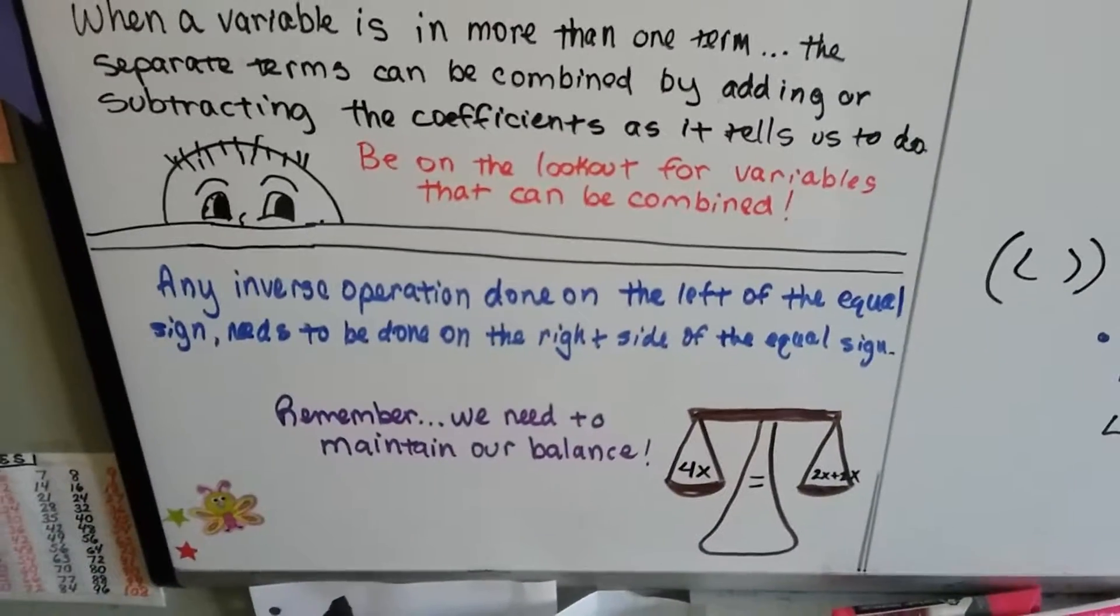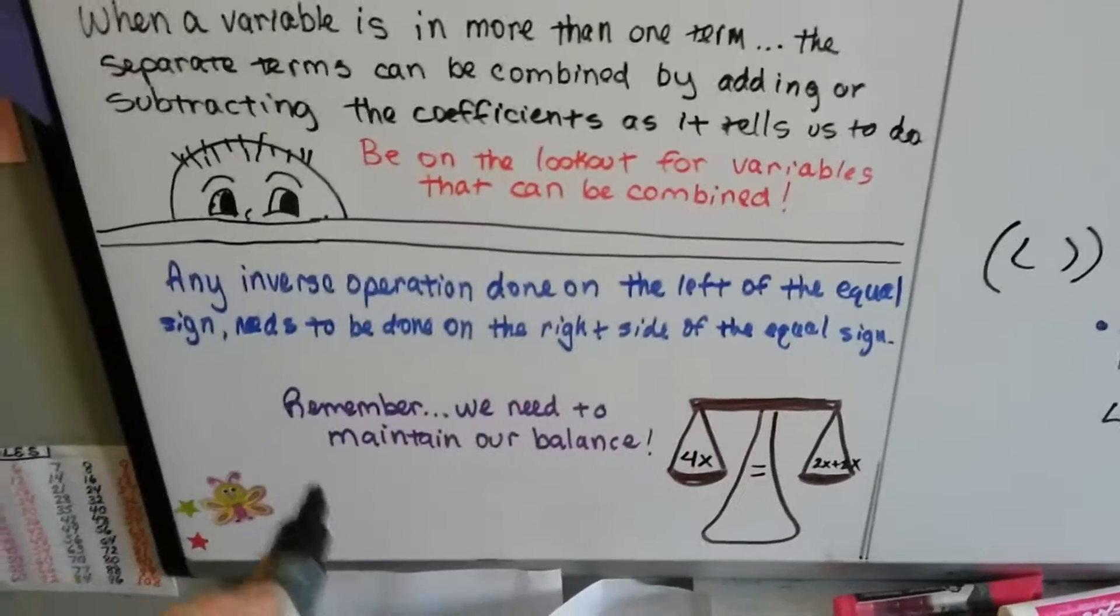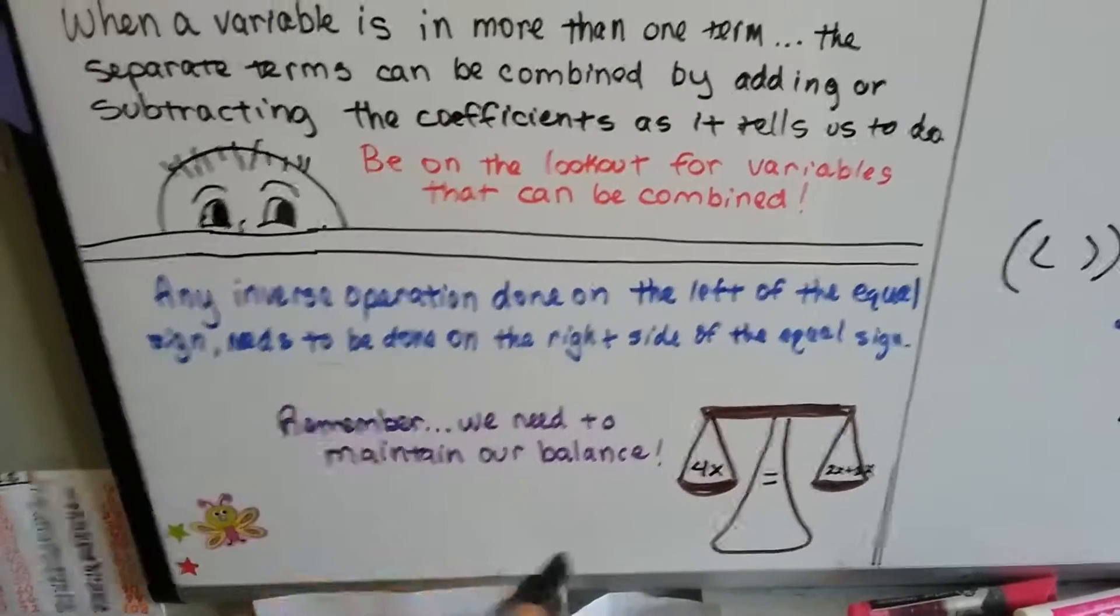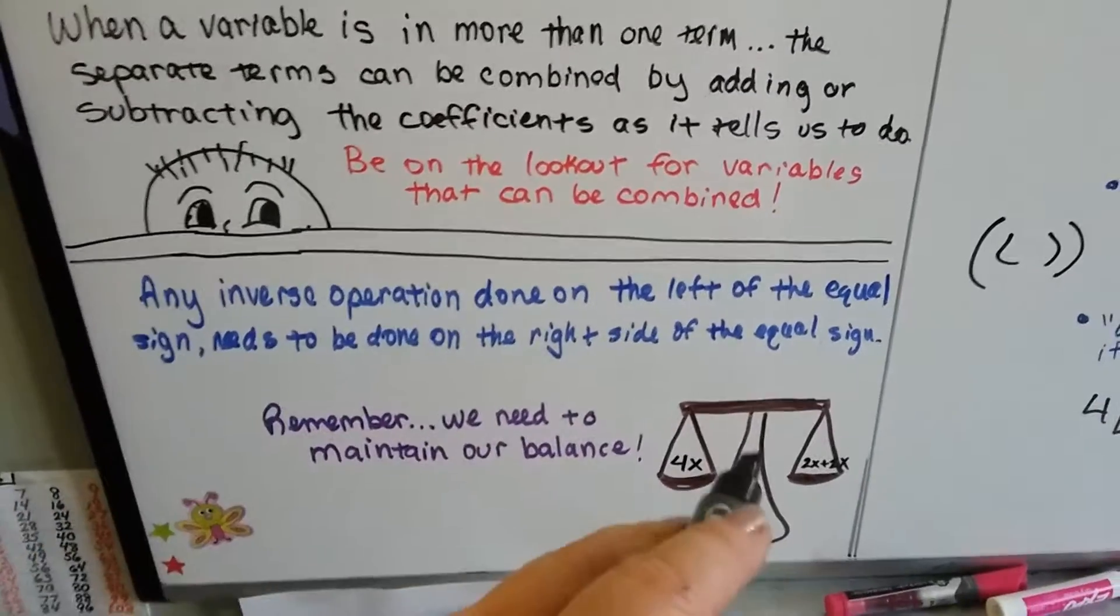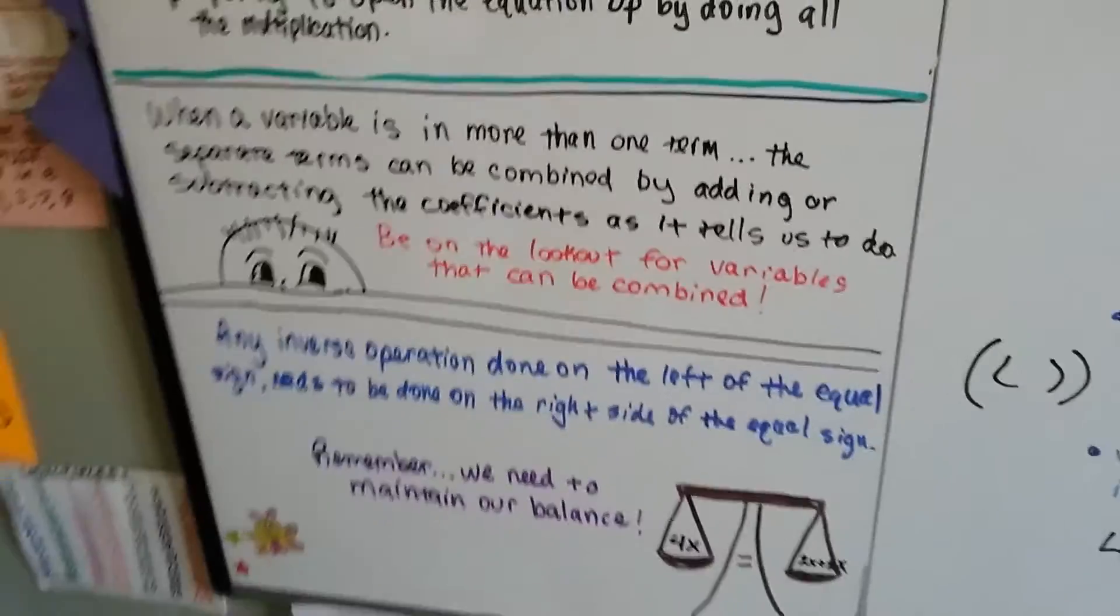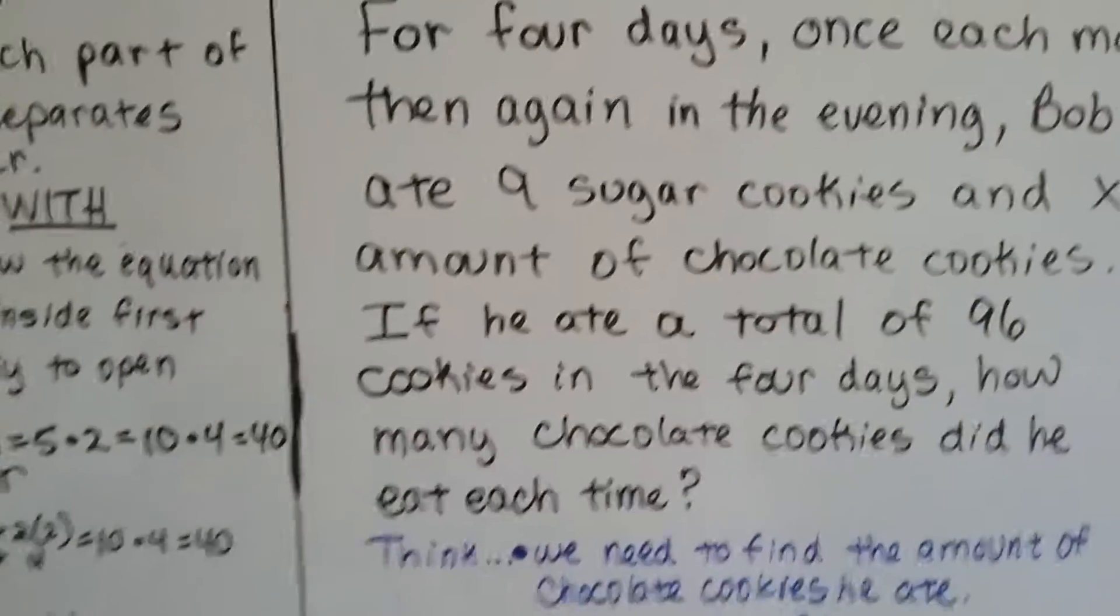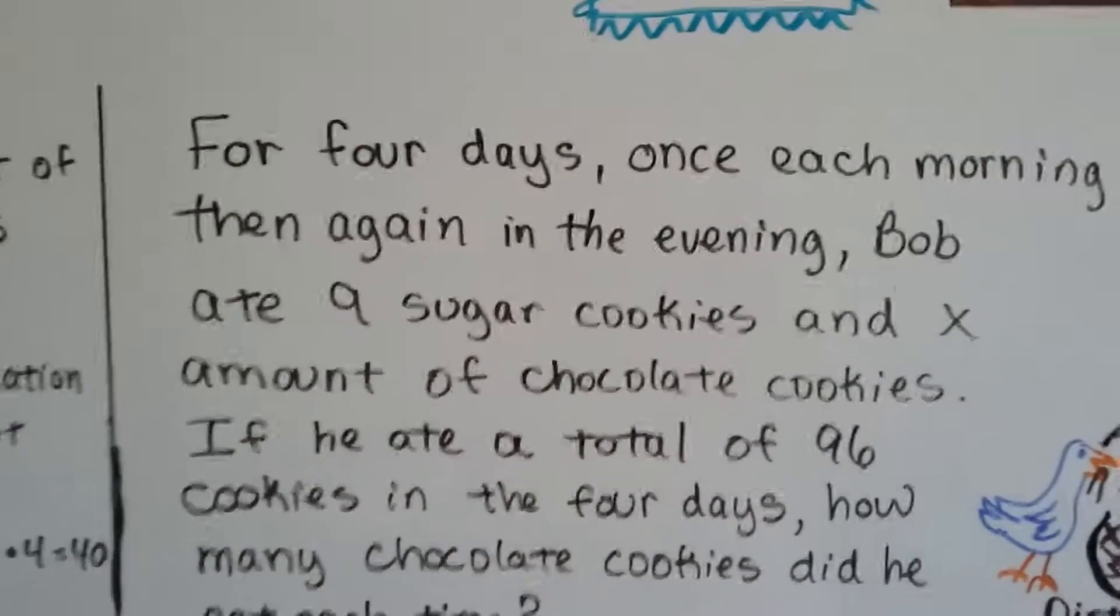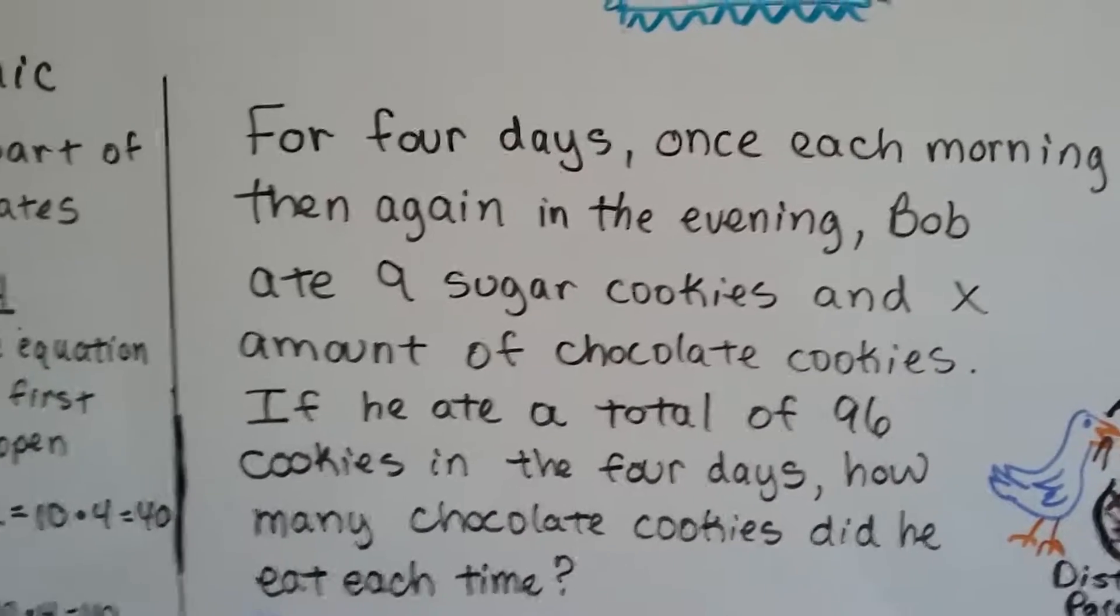Also remember that any inverse operation done on the left side of the sign needs to be done on the right side of the sign and vice versa. So we maintain our balance, so our scale doesn't become too heavy on one side. So here's the problem we need to write the equation for.